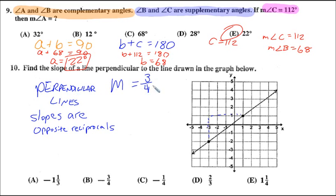This means that we flip the fraction, that's reciprocal, and then we flip the sign and make it the opposite. So the slope of the perpendicular line to this is negative four over three. As a mixed number, that's negative one and one-third.